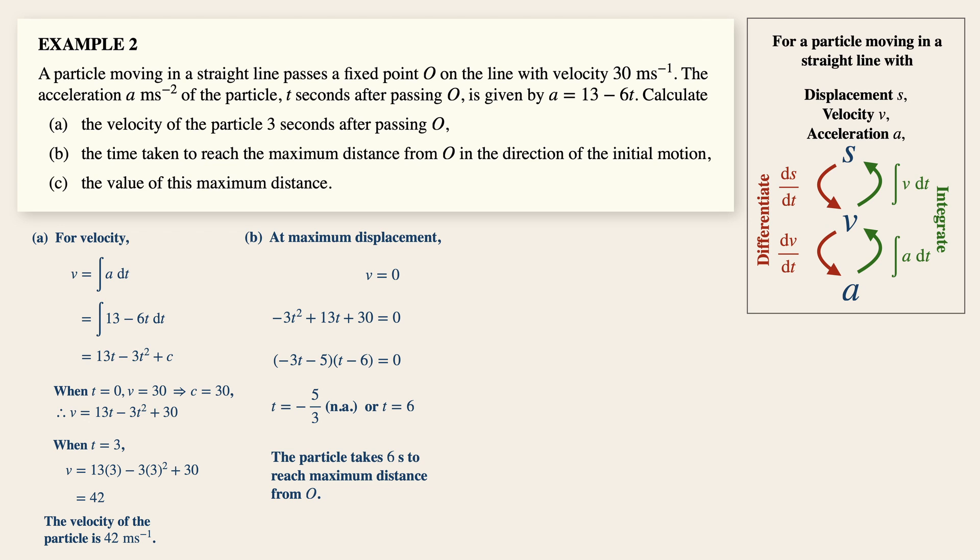Now in part c, in order to get the distance, we need to get the equation of the displacement, which is integrating v with respect to t. Now doing so we will then have 13 over 2 t squared minus t cubed plus 30t plus c. Now when t is equals to zero, s is equals to zero as well, which gives us a value of zero for c.